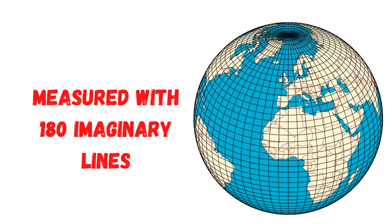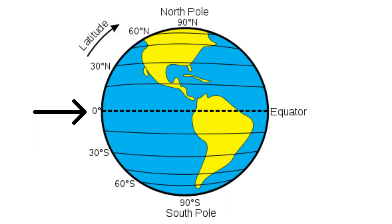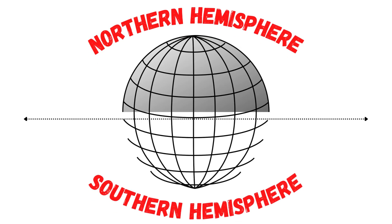Latitude is measured with 180 imaginary lines that form circles around the Earth, east to west and parallel to the equator. The equator is the most well-known latitude on Earth. It sits at zero degrees latitude and is the longest of all latitude lines.